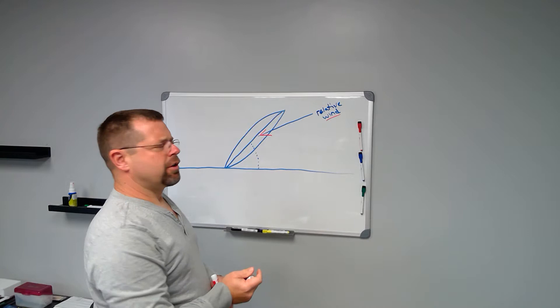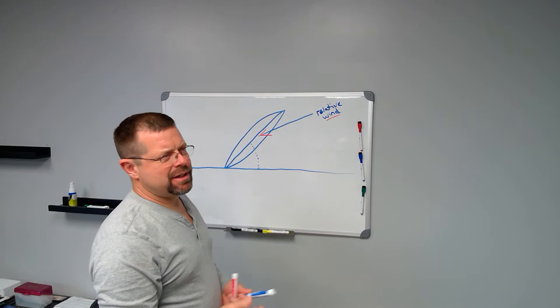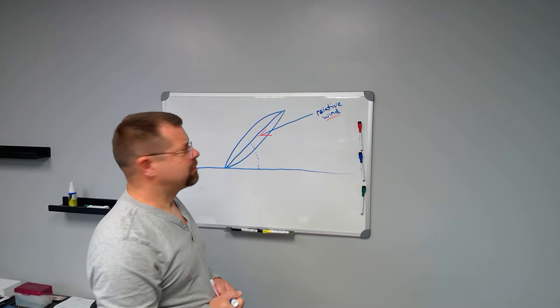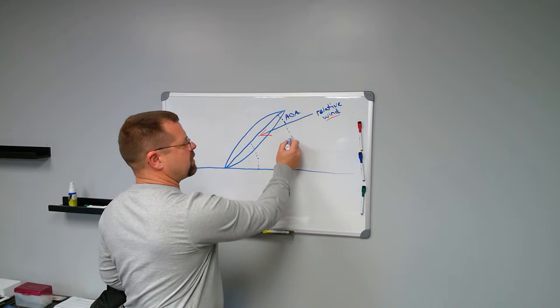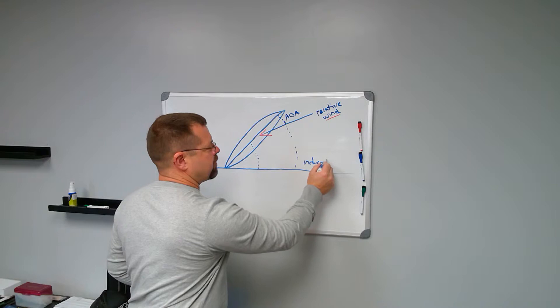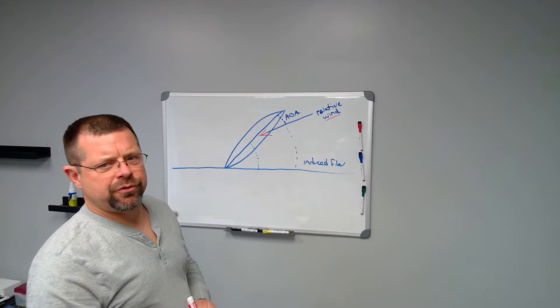So in order to know what angle of attack is, you must know that the angle of attack is the angle between the relative wind and the cord line. That makes this your angle of attack. That makes the rest of this induced flow. Your lift comes from angle of attack.